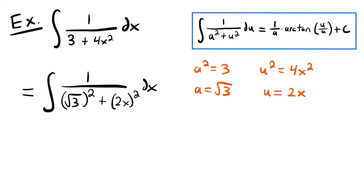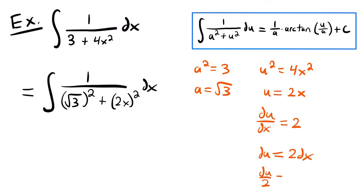Now we rewrite in terms of u using u substitution. Taking the derivative of u equals 2x, we get du/dx equals 2, so du equals 2 dx. Since we only have dx in our integral and not 2dx, we divide both sides by 2, giving us du divided by 2 equals dx. We can now replace dx in the integral with du divided by 2.